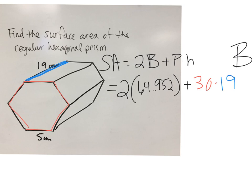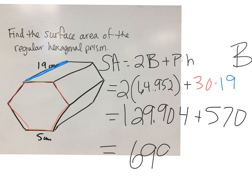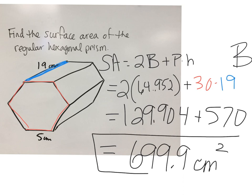If I put all of this in my calculator: 64.952 times 2 is 129.904, plus 30 times 19 is 570. Adding these two things together, I get a total surface area of 699.9 square centimeters. I would need close to 700 square centimeters of paper if I were going to make this hexagonal prism.